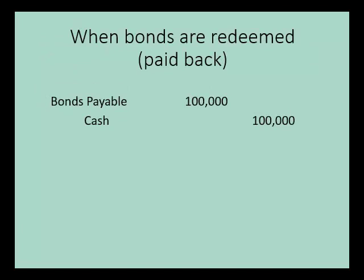Years from now, when the bonds become due and the corporation pays back the amount borrowed — because bonds payable are a long-term liability, so this will be years in the future — the company will debit bonds payable and credit cash when the bonds are repaid.